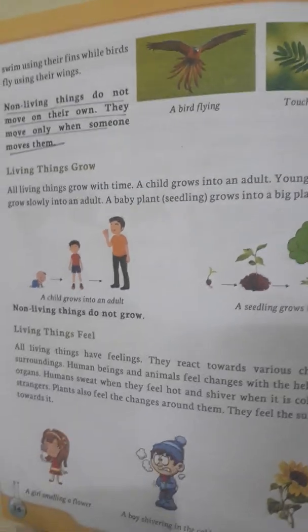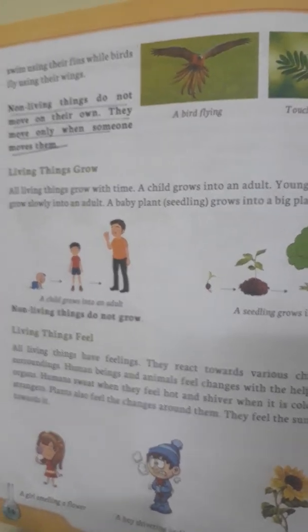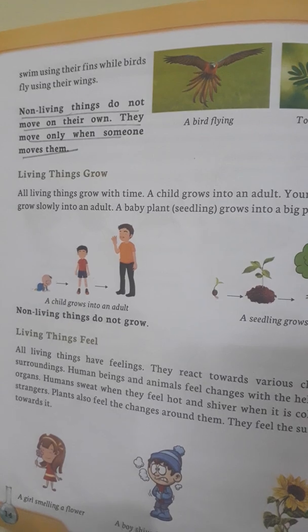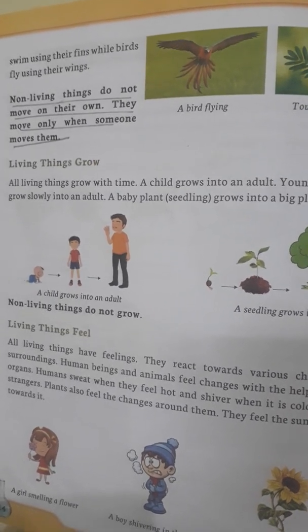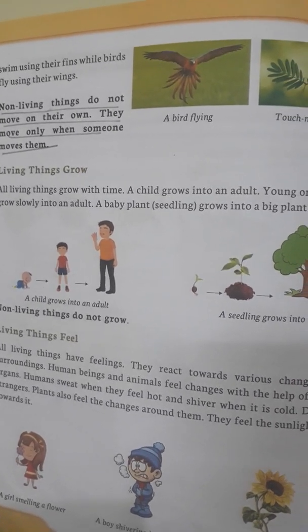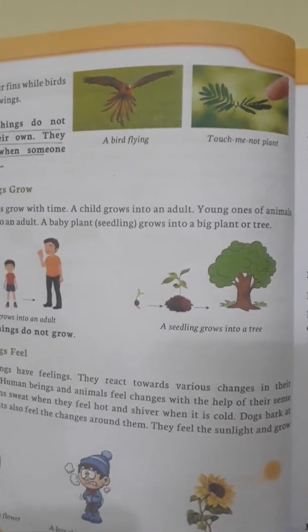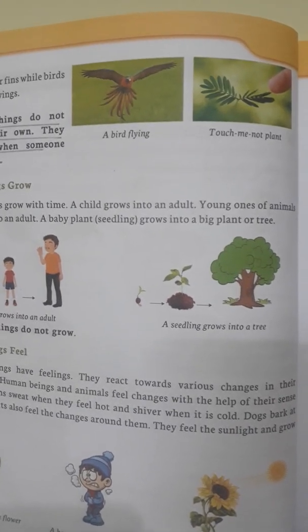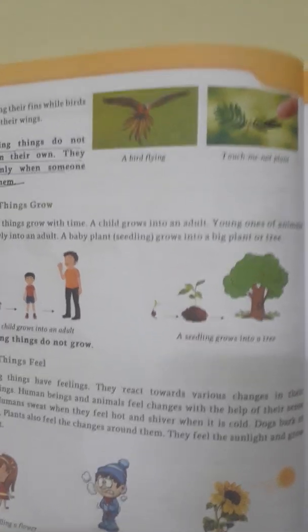We are coming to the second part of living and non-living things. Fish swim using their fins while birds fly using their wings. You can see the picture of a touch-me-not plant — whenever you touch this plant, it immediately closes down.